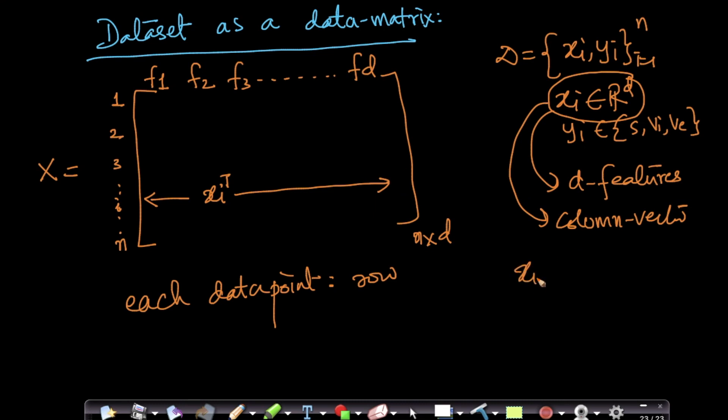So if xi is a column vector, xi transpose, which means swapping, basically converting your rows to columns and columns to rows, is a row vector. I am representing xi transpose as a row vector of d dimensional space. So each row here corresponds to one data point, each column corresponds to one feature.